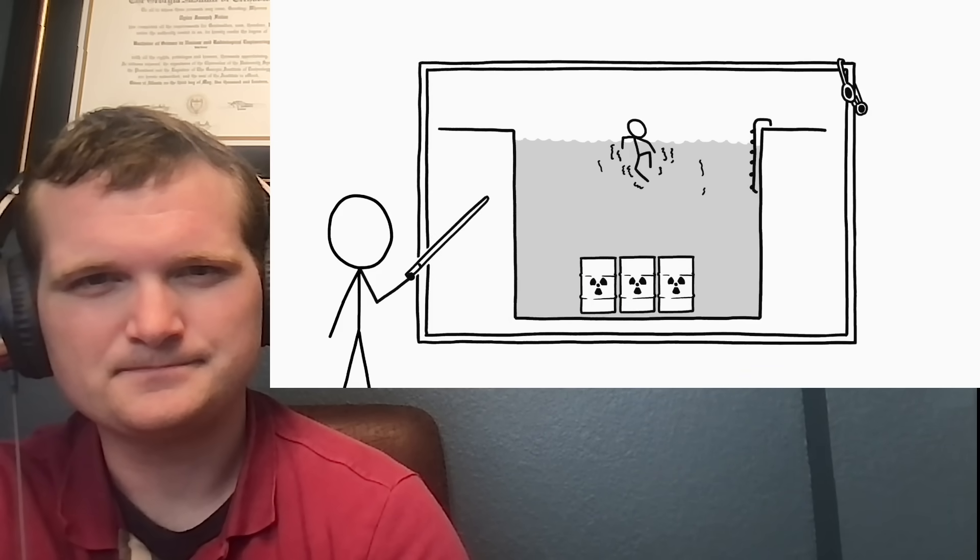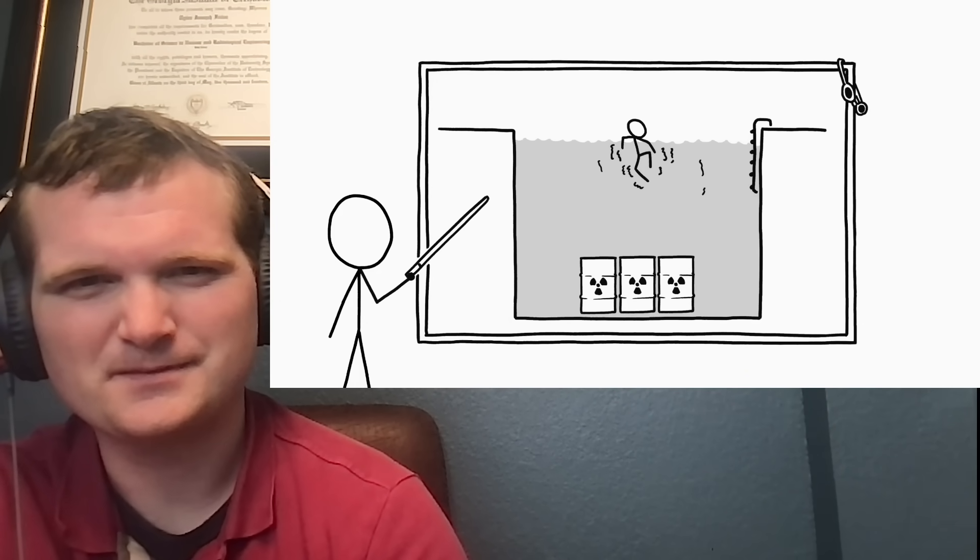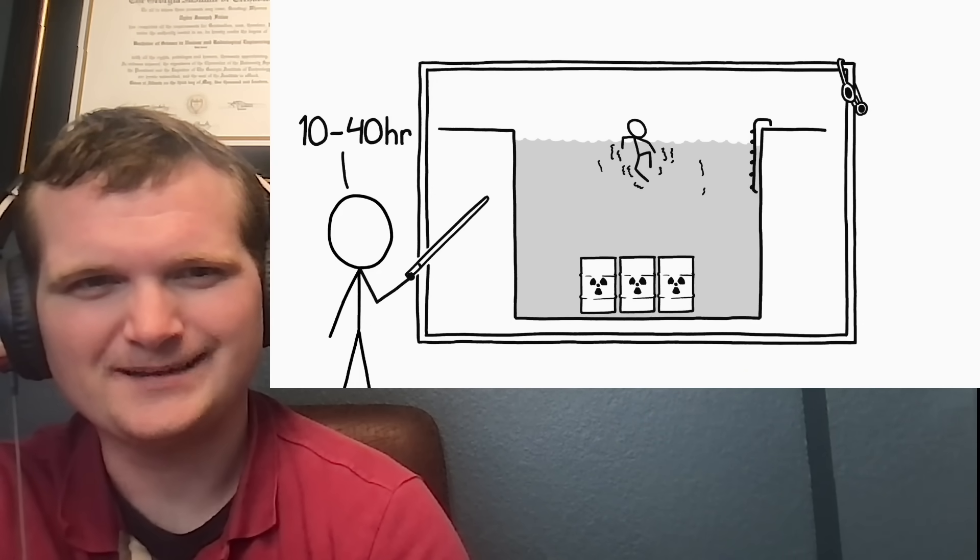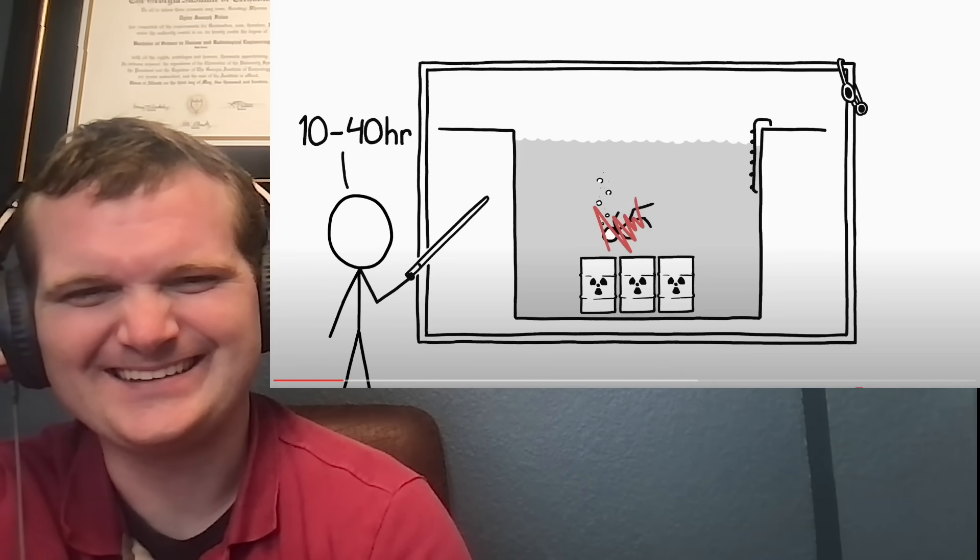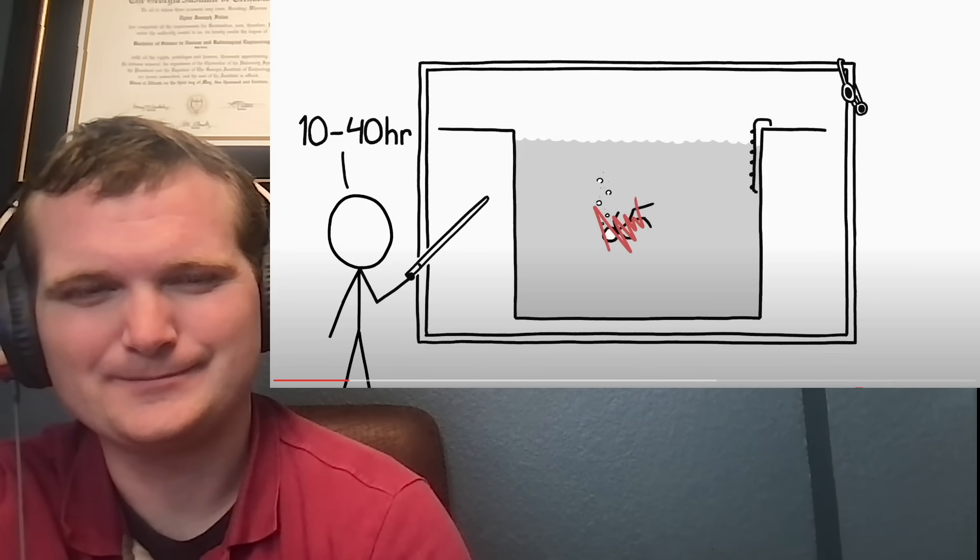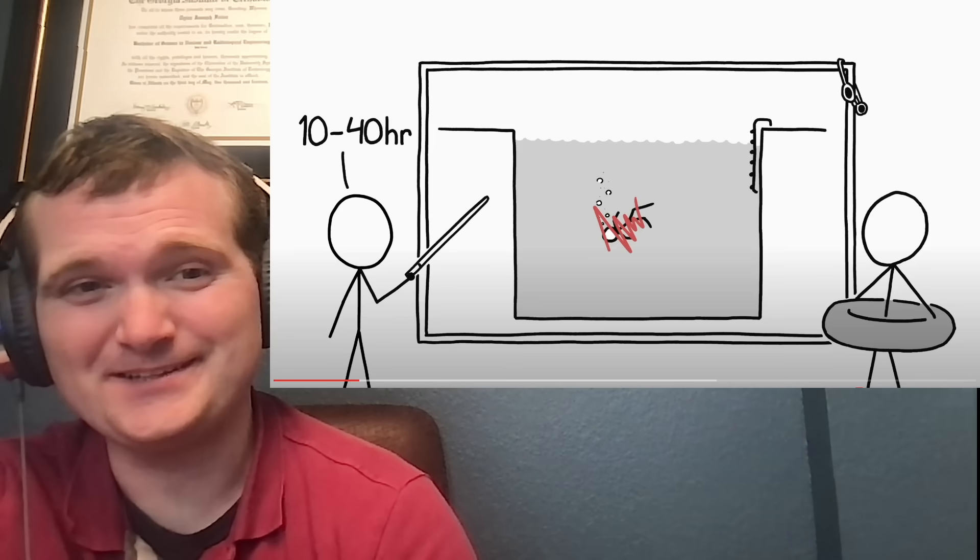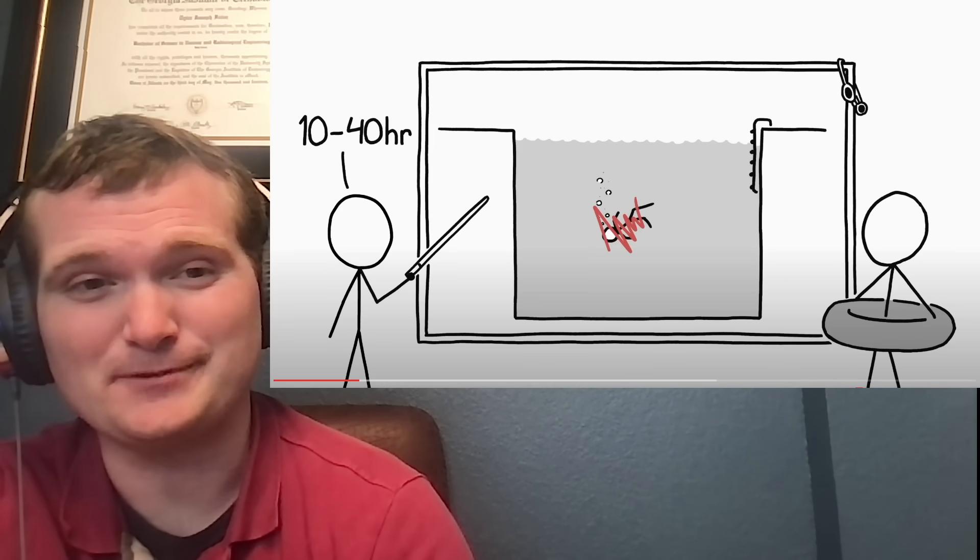The short answer is that, assuming you're a reasonably good swimmer, you could probably tread water anywhere from 10 to 40 hours. At that point, you'd black out from fatigue. Exactly. Drown. This is also true for a pool without nuclear fuel at the bottom. And it's not really the question Jonathan was asking. That really is the biggest hazard associated with the spent fuel pool. It's drowning. If you're doing work near the spent fuel pool, you need to wear a life vest for that reason.